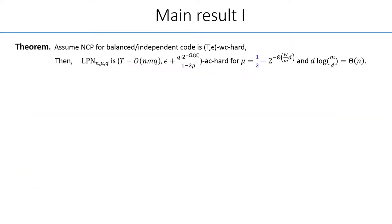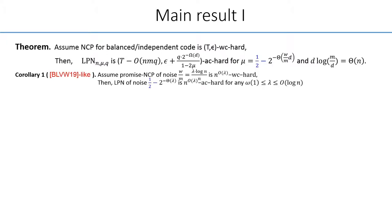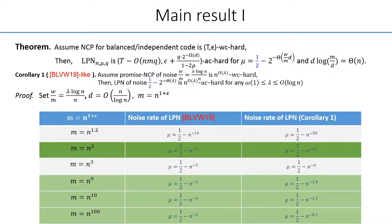Now we state our main result, that assume that the NCP problem is hard in the worst case, then it implies the LPN problem is hard for certain parameter choices. First, we get the similar result as BLVW, by setting the parameters to appropriate values. In this case, our result looks asymptotically the same as BLVW. If we want to compare more quantitatively, then as tabulated, for most value of M, our result in the right hand is slightly worse.